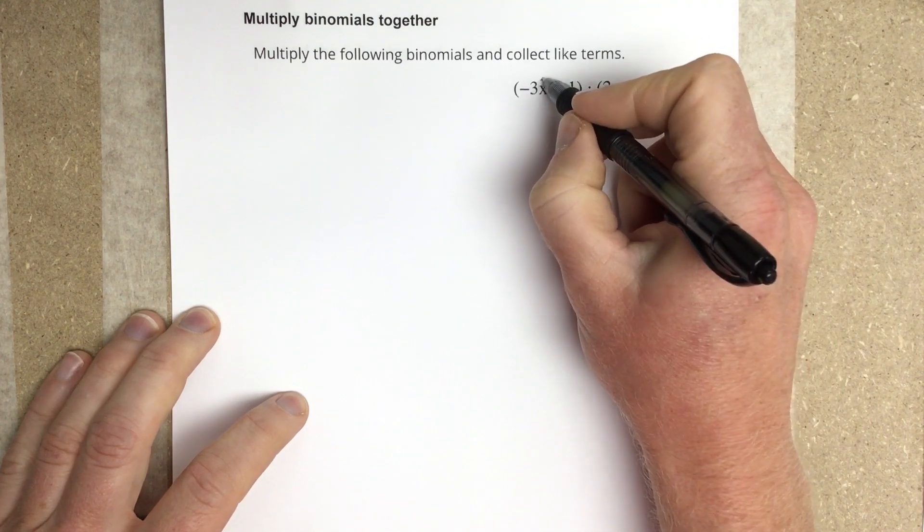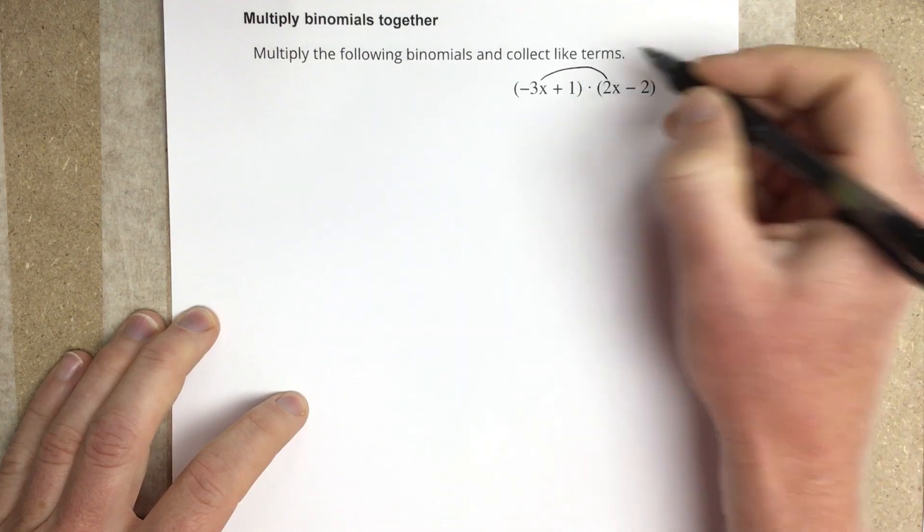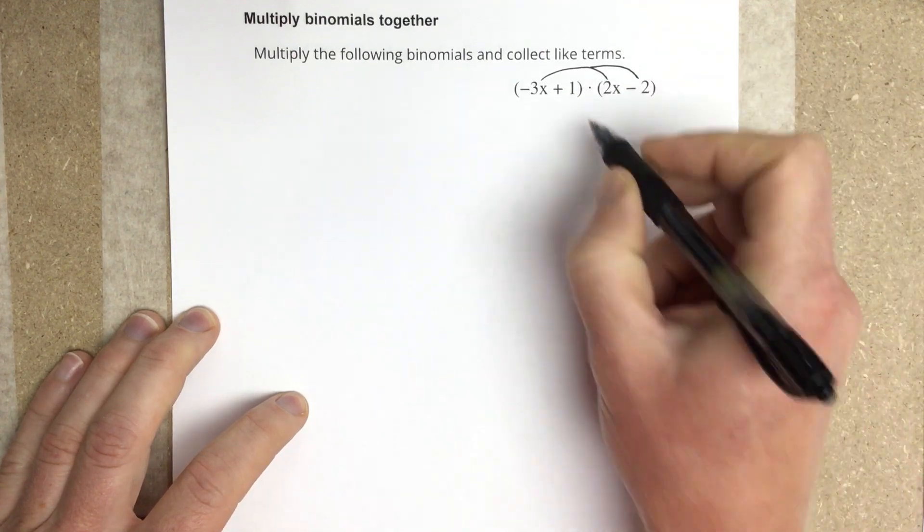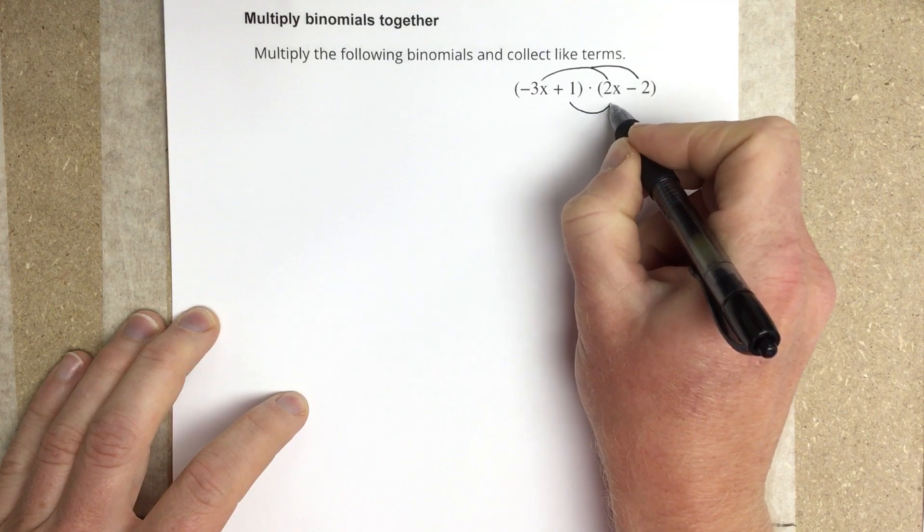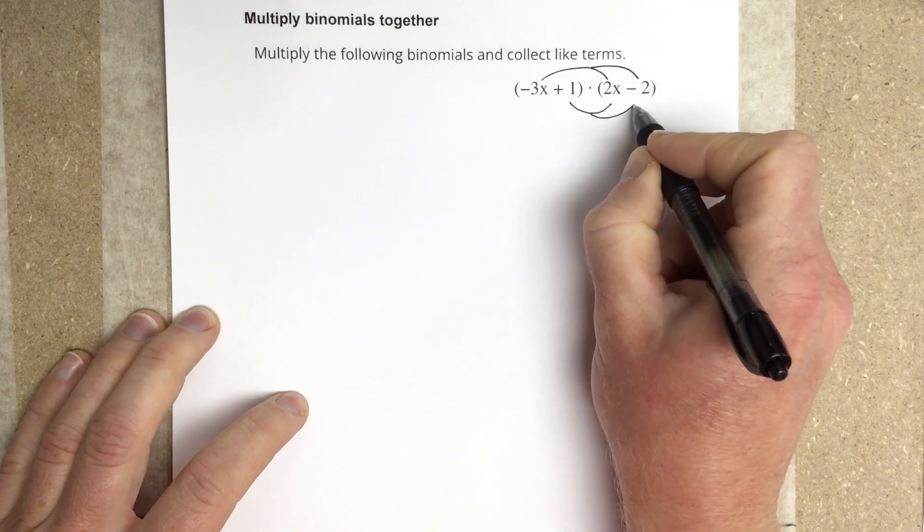We have to take this negative 3x, multiply it times 2x, and then also multiply it times negative 2. Then the 1 we need to multiply times 2x, and then times negative 2.